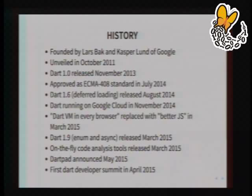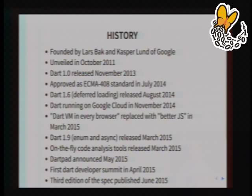They also had the first Dart Developer Summit in April 2015. The third edition of the spec has just been published with some new features, including the ability to declare that a variable will never have a null value. This apparently saves computation time on the JavaScript side. The spec has almost been approved, but it won't get built into the language for another maybe six months to a year.